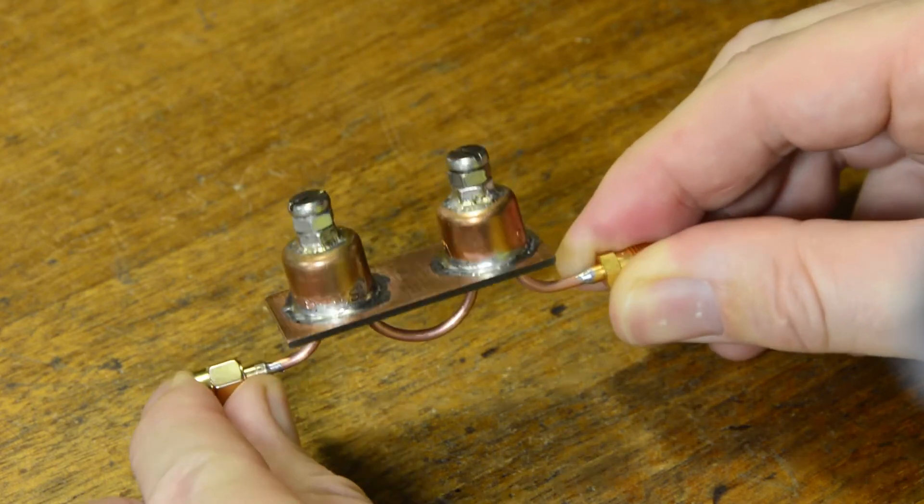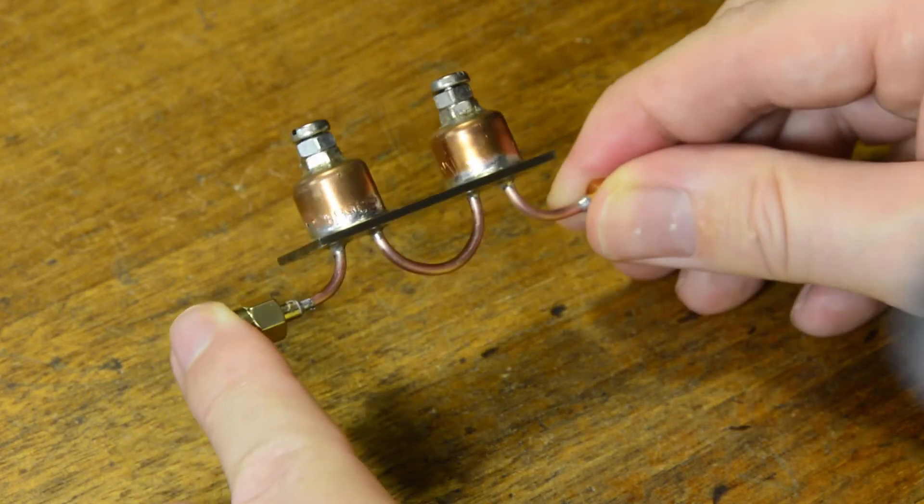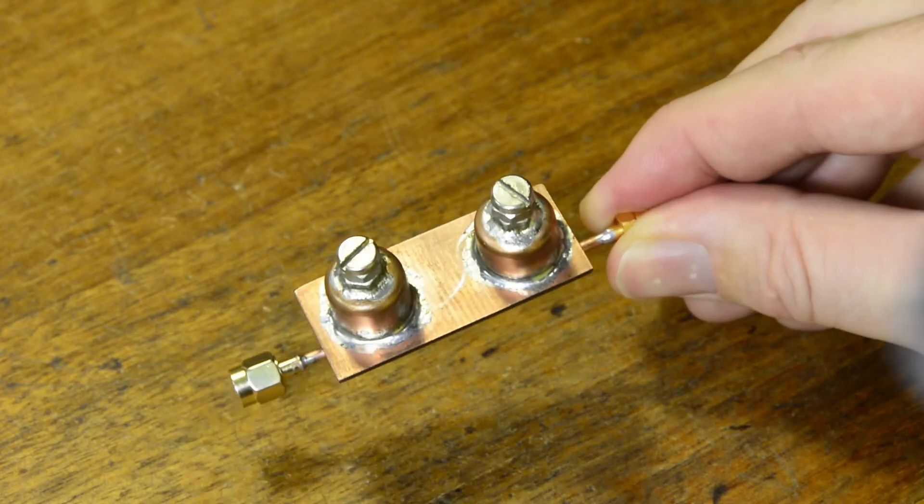So that's it, a 10 gig bandpass filter very easy to make costing just under ten dollars so not expensive at all and lots of fun to make.